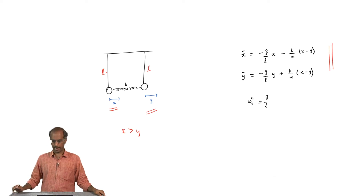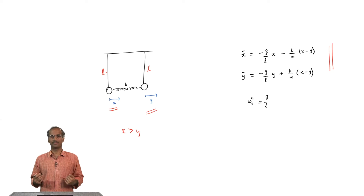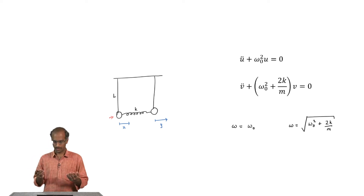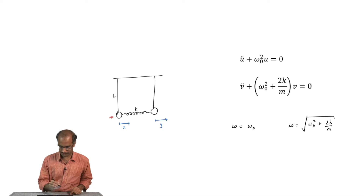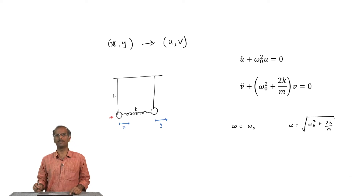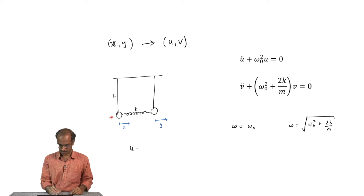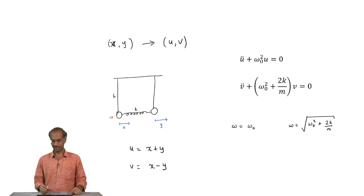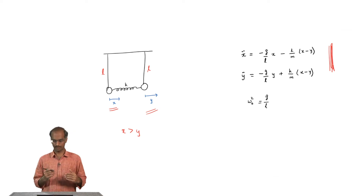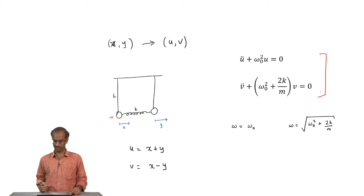The trick we did was to add the two equations and subtract the two equations. When we added and subtracted the two equations, we went to a new set of equations. To do that, all we did was go from the coordinate system described by (x, y) to a coordinate system described by (u, v). The actual transformation was: u = x + y and v = x − y. When you do this transformation, this particular set of two equations transforms into two new sets of equations.